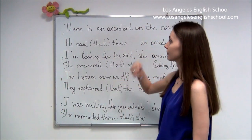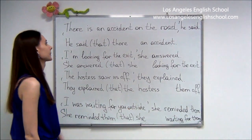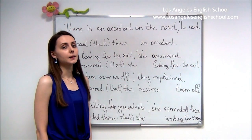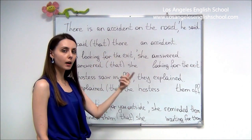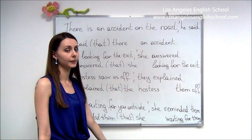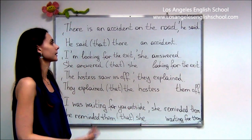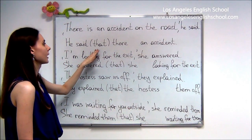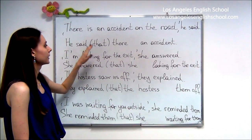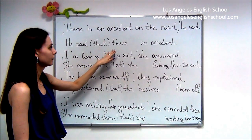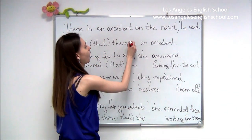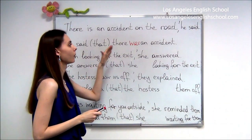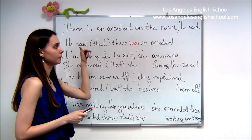Let's have a look. When we have the present simple tense — for example, 'There is an accident on the road,' he said — that was true at the time the speaker was talking. Now, of course, there is no accident, so we need to transform the present simple into the past simple. We say: he said (that) there was an accident on the road. You can use 'that' or omit it. So present simple changes into past simple.